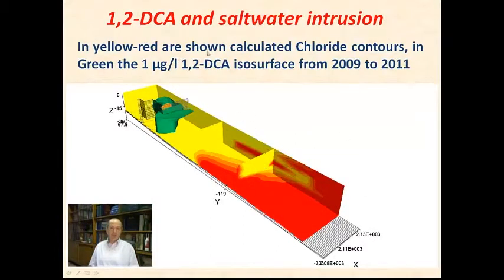And in yellow-red are shown the calculated chloride contours. And, of course, the green is representing the 1,2-DCA isosurface. And you can see also the physical barrier. This grid represents the physical barrier. If you imagine that the physical barrier has been placed in the area after that contaminant has reached the downgradient area, we will see what's happened by the remediation plan by the pumping activity after the pumping activity started, and, of course, upgrading of the physical barrier.